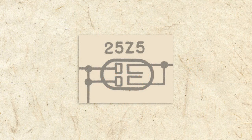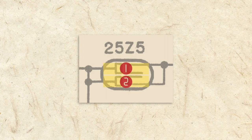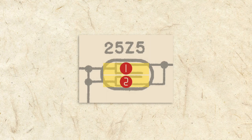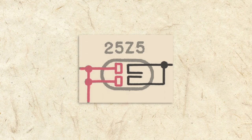As you can see on the schematic, the 25Z5 rectifier tube actually has two sets of filaments, cathodes, and plates. Both sets work as described above, but the job is split between the two to better handle the high current.